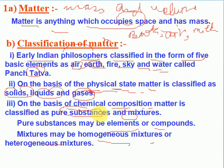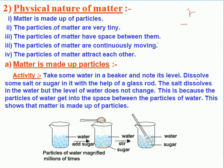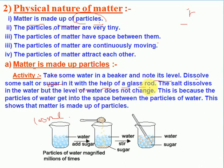The first physical nature of matter is that matter is made up of particles. For this activity, take some water in a beaker and notice its level. If you have taken 100 ml of water and dissolve some salt or sugar in it with a glass rod, the salt dissolves in the water but the level of water doesn't change. This is because the particles of salt get into the space between the particles of water.